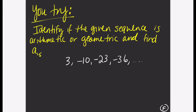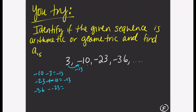Go ahead and try the following — pause the video and come back. In this problem we are identifying if the given sequence is arithmetic or geometric, and then finding the 15th term. Let's check arithmetic first: subtract second minus first — negative 10 minus 3 is negative 13. Third minus second — negative 23 minus negative 10 is negative 13. Fourth minus third — negative 36 minus negative 23 is also negative 13. The pattern is minus 13, therefore this is arithmetic with common difference negative 13.